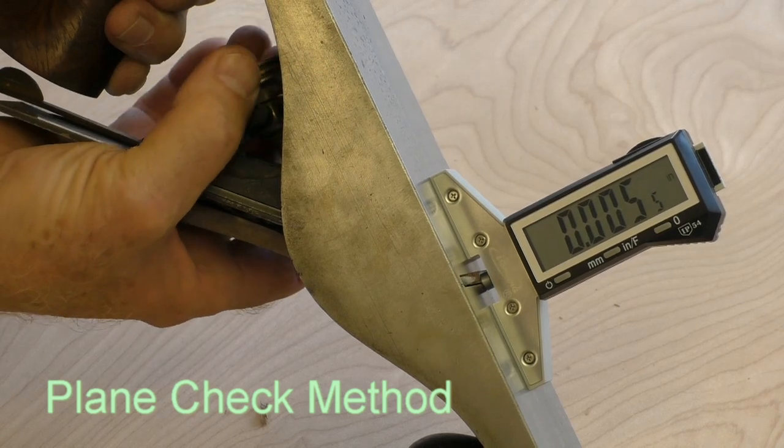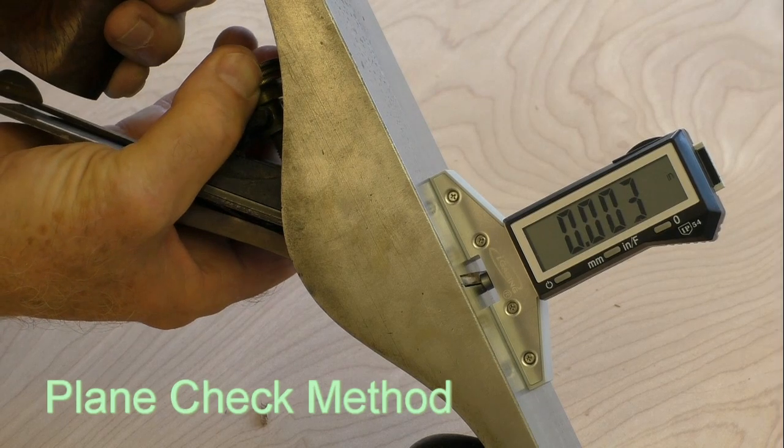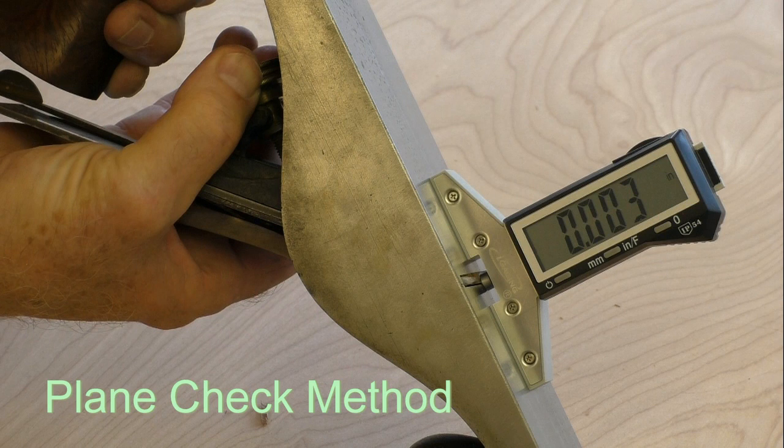With PlaneCheck, precise plane iron settings are a snap. To set the depth, place PlaneCheck across the middle of the blade. Raise the blade to the setting you want. You can literally watch your adjustments as they are made.